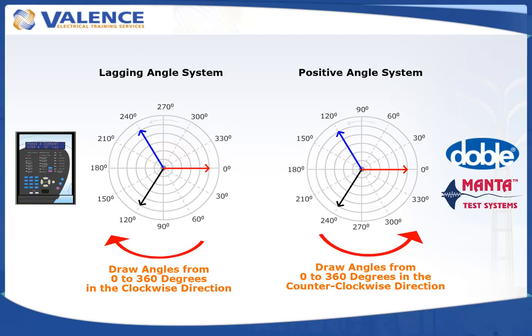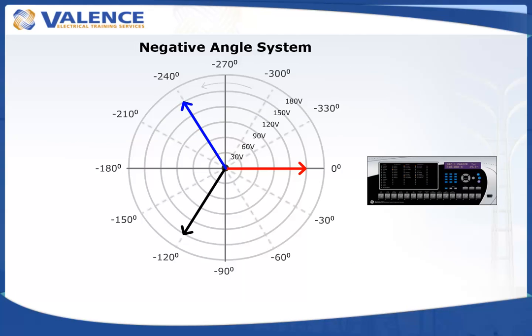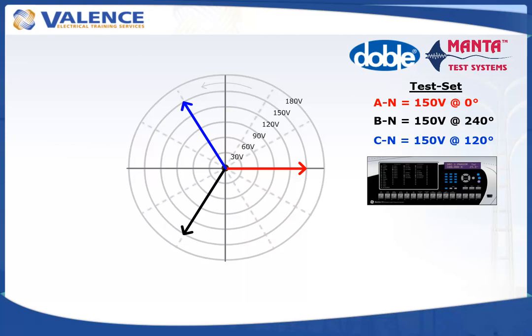Two different angle systems aren't enough for the world apparently, so GE UR relays use a negative angle system. In this system, the angles are plotted from 0 to negative 360 degrees in the clockwise direction. If you generated the same signals into a GE UR relay, it would report these angles.